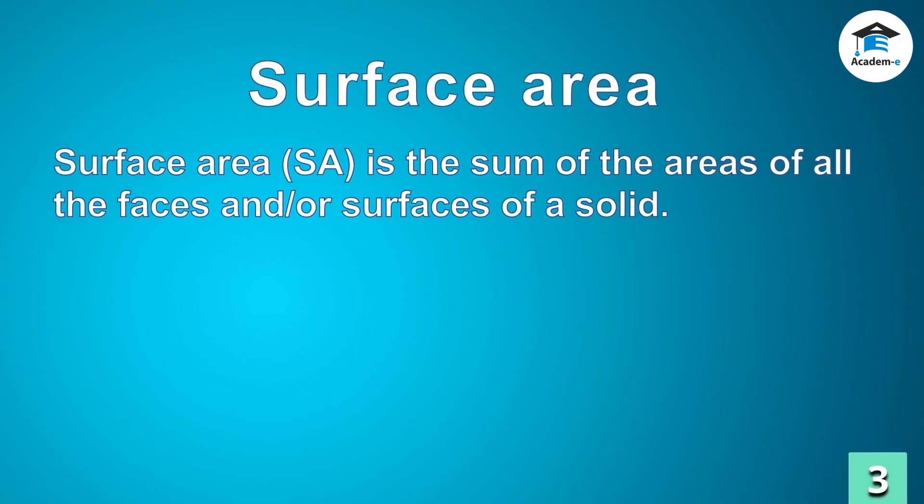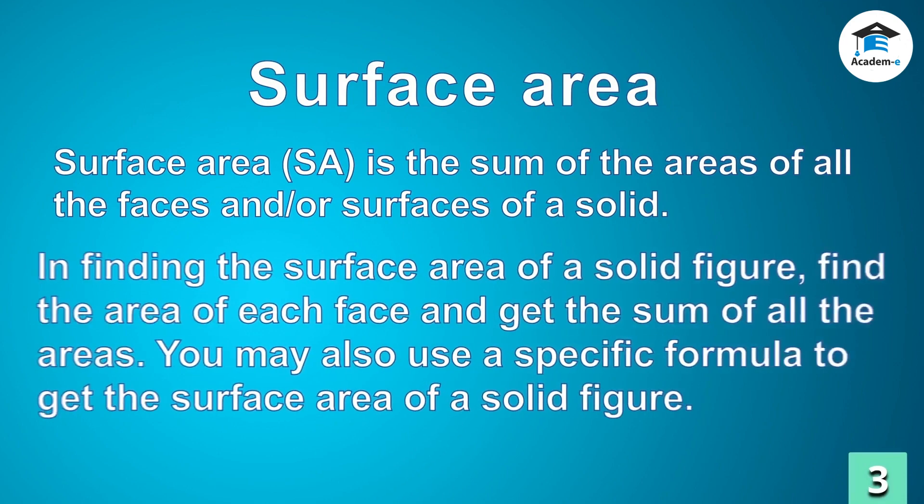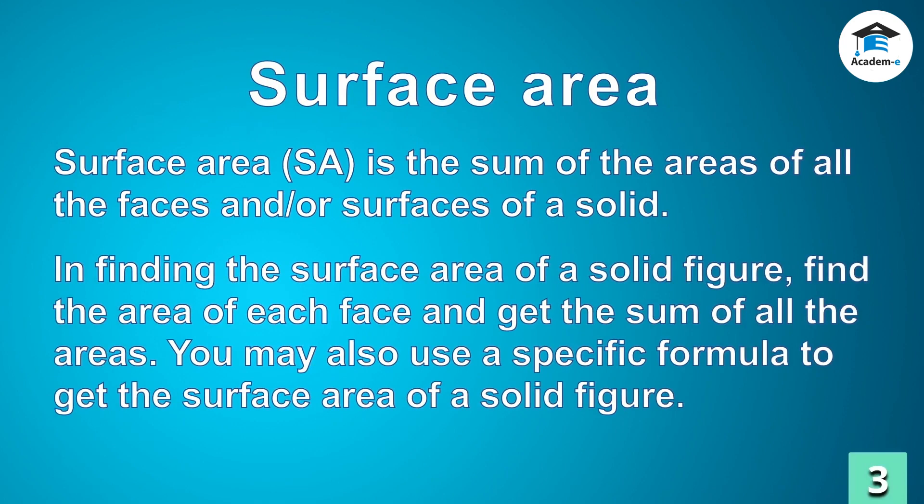Surface area, or SA, is the sum of the areas of all the faces and/or surfaces of a solid. In finding the surface area of a solid figure, find the area of each face and get the sum of all the areas. You may also use a specific formula to get the surface area of a solid figure.